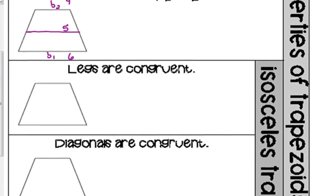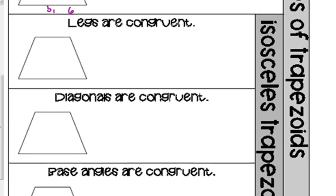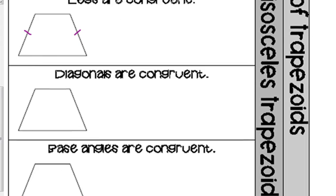In an isosceles trapezoid — like an isosceles triangle — the legs are congruent. So these two sides are the same. And in an isosceles trapezoid, the diagonals are congruent. However, notice they don't bisect each other — it's not quite like the rectangle and the square; it's pretty obvious in the picture that those parts are not the same length.